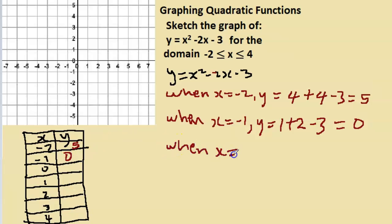When x = 0, y = 0², 0, -2 times 0 is 0, so we're left with just -3.